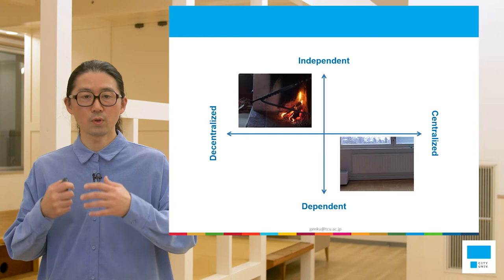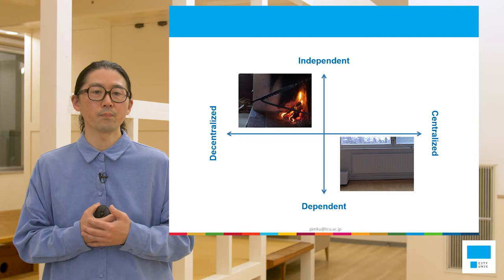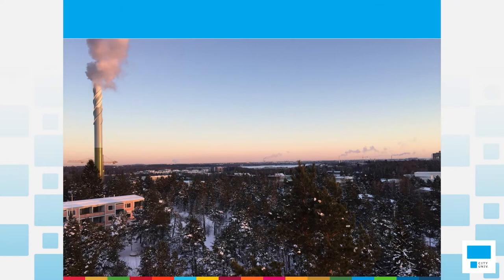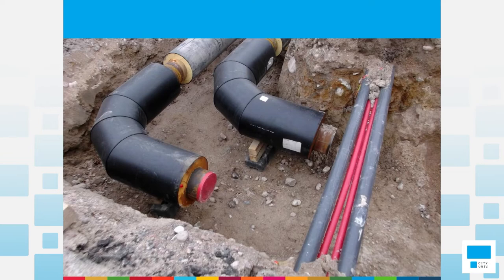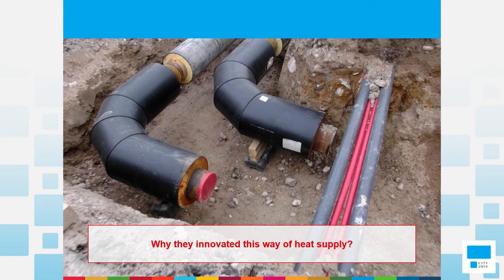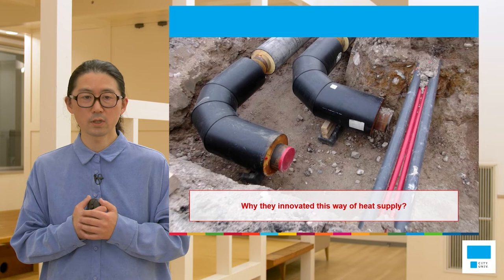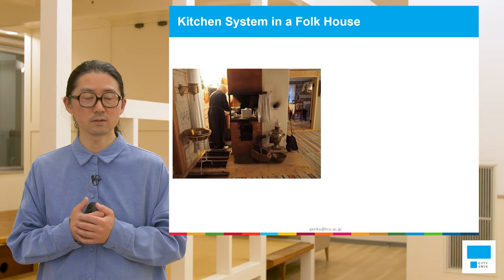We depend on that heating system and can keep our daily life safely and healthily. I want to show one picture like this — it shows some chimneys in the city area, and under those chimneys is the location of the power plant or the heat plant. Besides the chimneys, you can see the heat supply plant, and underground, pipes deliver the heat near your living space. The question is: why did they innovate this way of heat supply, especially in the case of Nordic countries? The clues can be found from the past folk houses.